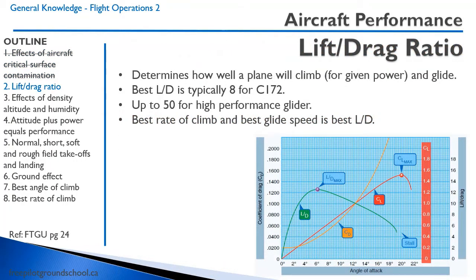Let's talk about the lift-drag ratio. Lift is the vertical force sustaining an aircraft in flight; drag is what pulls you back. The lift-drag ratio determines how well an airplane climbs for a given power, how well it glides, and its range. You want high lift and low drag. A typical lift-drag ratio would be 8 for a Cessna 172, or up to 50 for a high-performance glider.